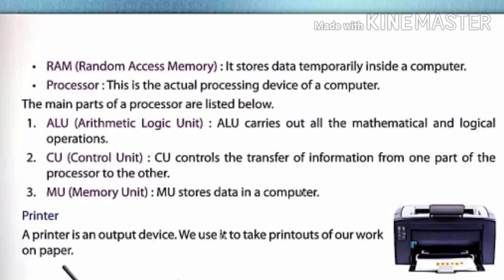Number two — CU. CU controls the transfer of information from one part of the processor to the other. CU commands which information goes where and who does what work. Number three — MU, memory unit. MU stores data in a computer.